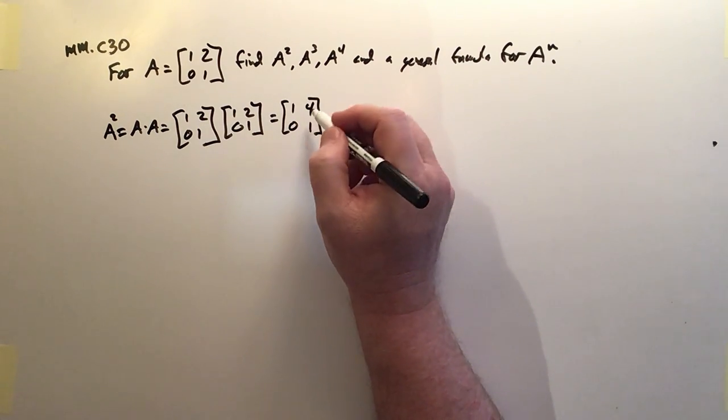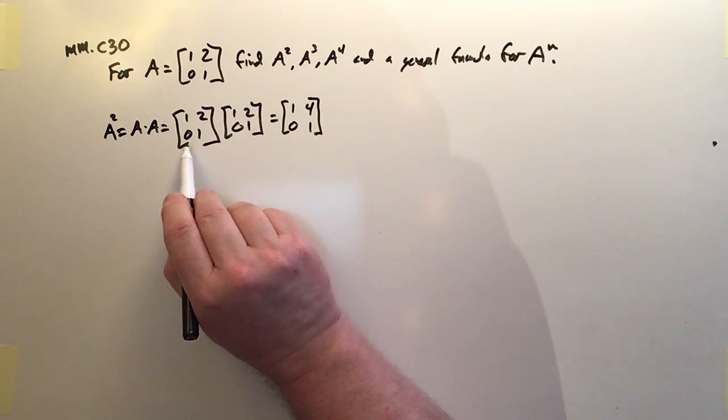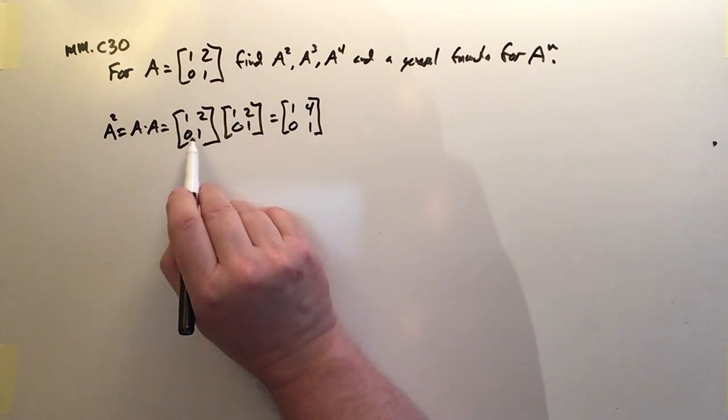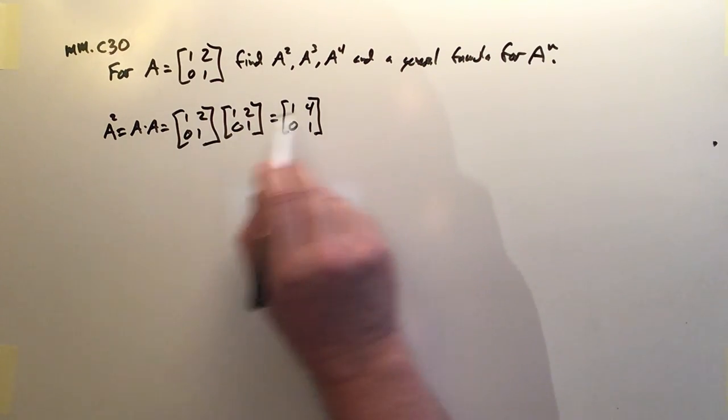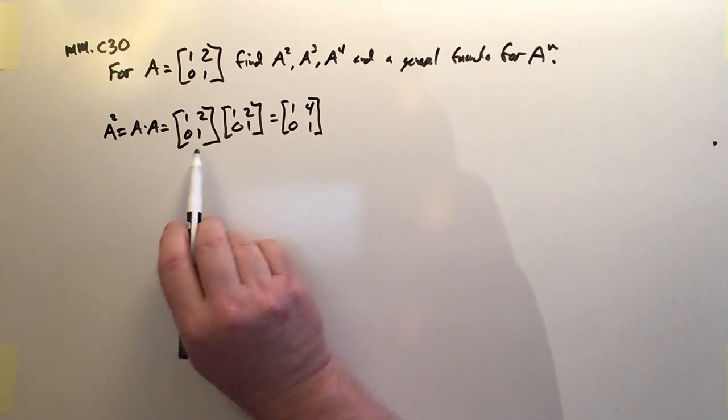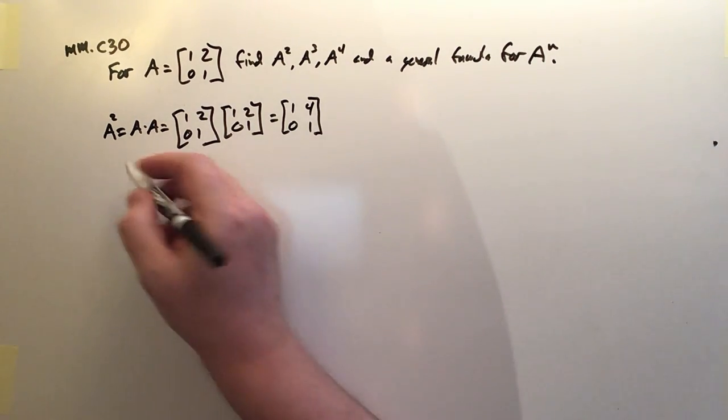So I'm tempted right now to look at it and go, hey, maybe it's everything squared, like the individual elements squared. 0 squared is 0, 1 squared is 1, 1 squared is 1, and 2 squared is 4. So maybe that's what this A to the n will be, just square the individual elements. But let's keep looking for the pattern.